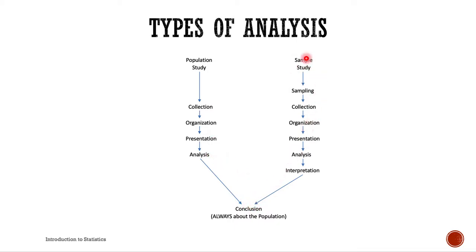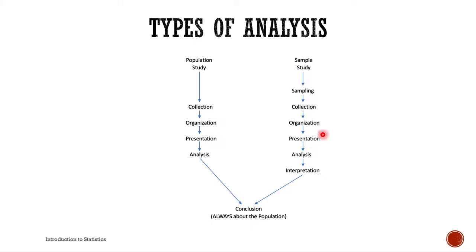Whereas when we do a sample study, we start with a population but we need to first do sampling — the procedure of taking representative samples from a big group, which is the population. After we have the sample, we know where to gather the data, so we collect it. Similarly, we then organize the data, present it, and analyze it. The procedures at this stage are similar to those in the population study.